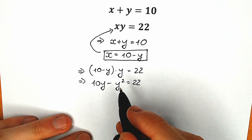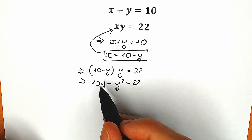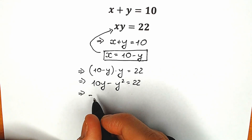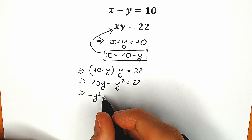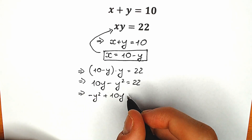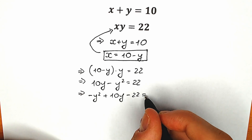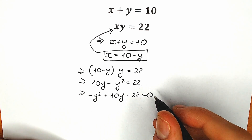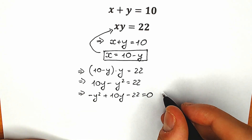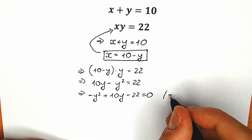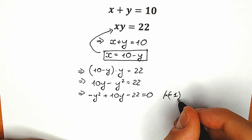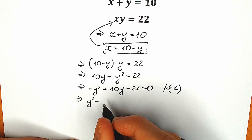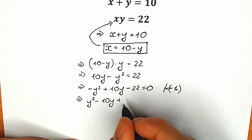Right now let's change the position because we prefer the second power on the first position, y on the second position. So: minus y squared, plus 10y, minus 22. And now the tricky move — we're going to multiply both sides by minus 1. As a result, what do we have? We have y squared minus 10y plus 22.